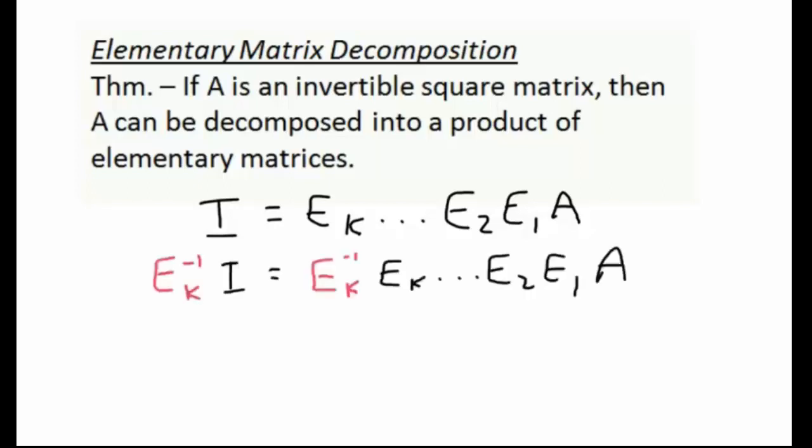Well, we could multiply both sides by Ek inverse. When we simplify on the left-hand side, we know that anything times the identity matrix is just going to be itself, so on the left we'll get Ek inverse. And we know that when we have a matrix beside its inverse, we can simplify this to the identity matrix. So this gets us one step closer to solving for A.